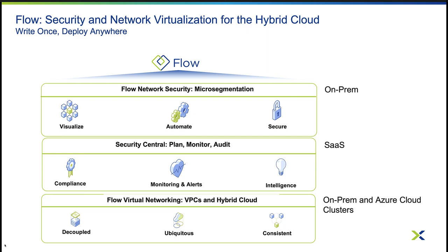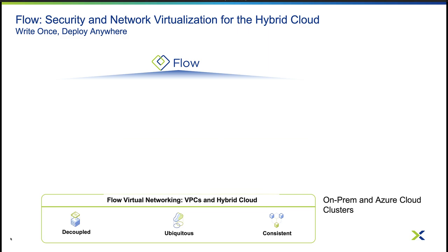This level of security planning uses machine learning to analyze ingested network data sent from your clusters. Flow Virtual Networking is the most recent addition to the Flow family. Flow Virtual Networking uses overlay networks to provide an enhanced set of network features for the AHV hypervisor.